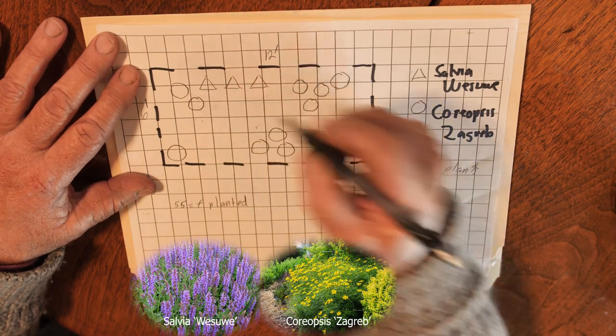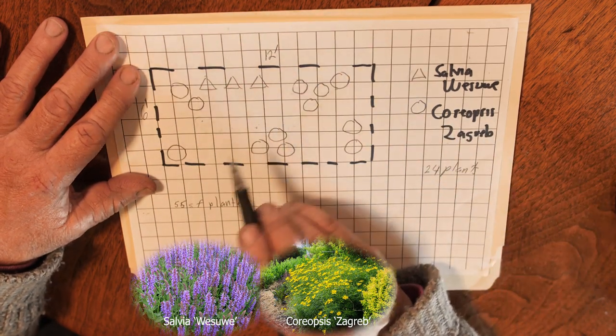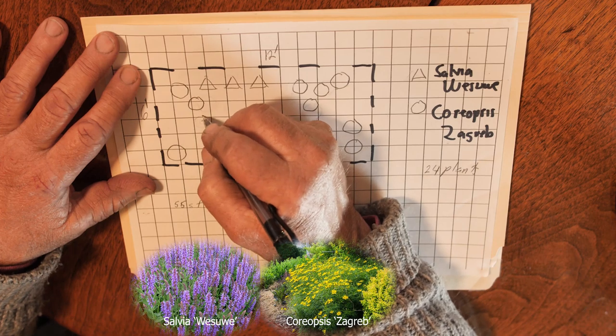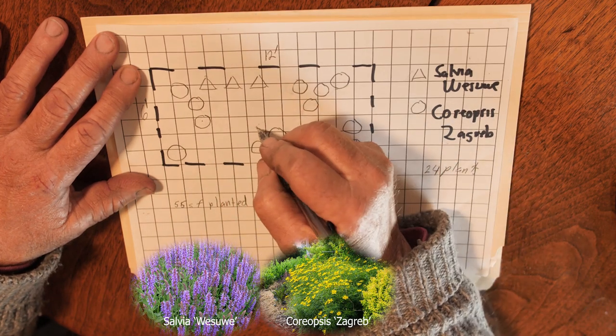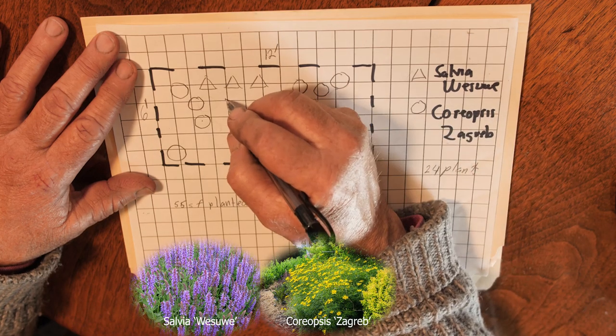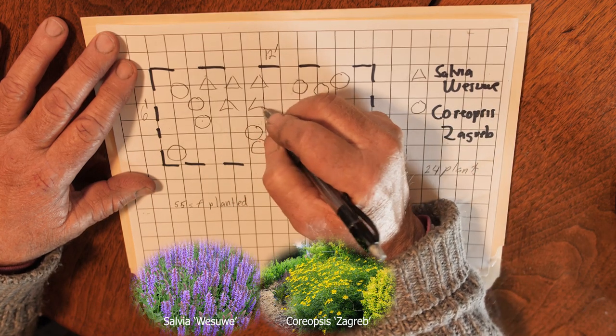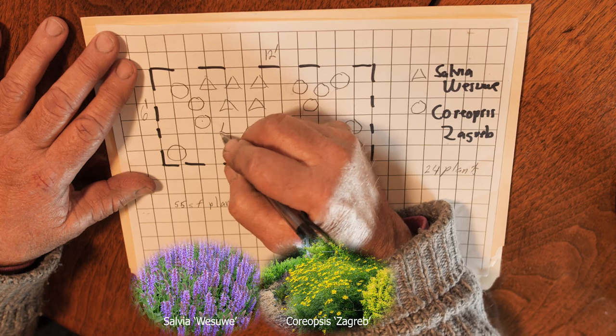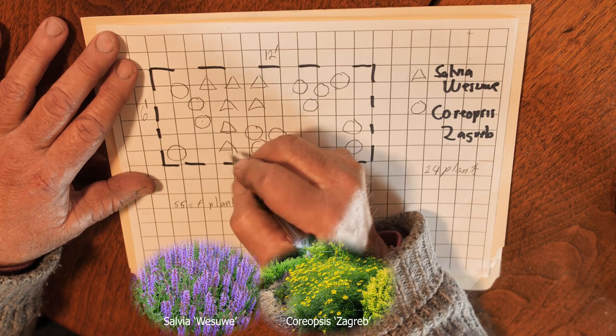So the circles are the Coreopsis and the triangle is the Salvia. I put in the Coreopsis—I've got one here, I'm going to add another one here. That'll give me about 15 plants. And then I just space in the Salvia wiesui quickly like this.